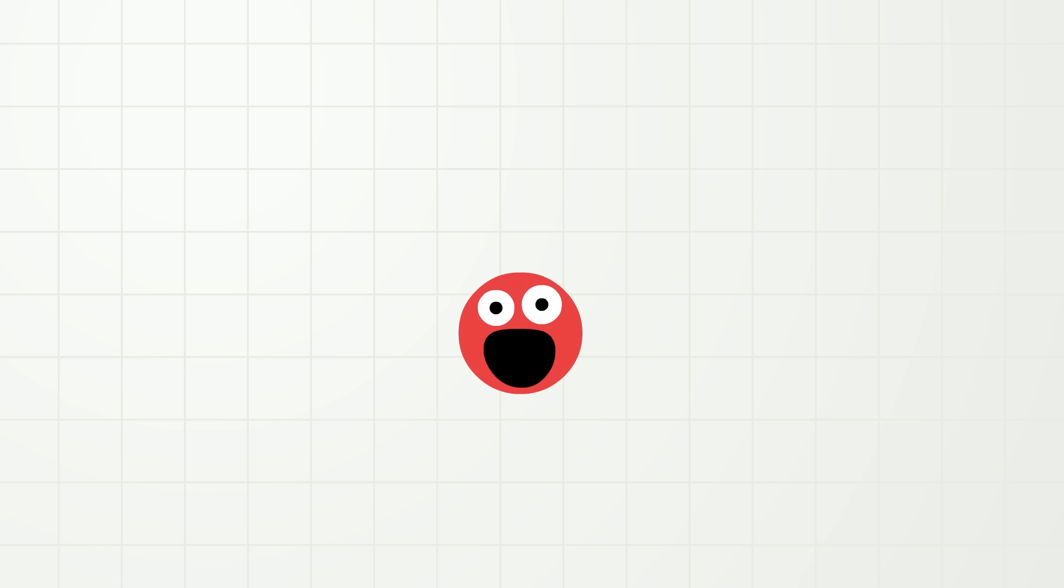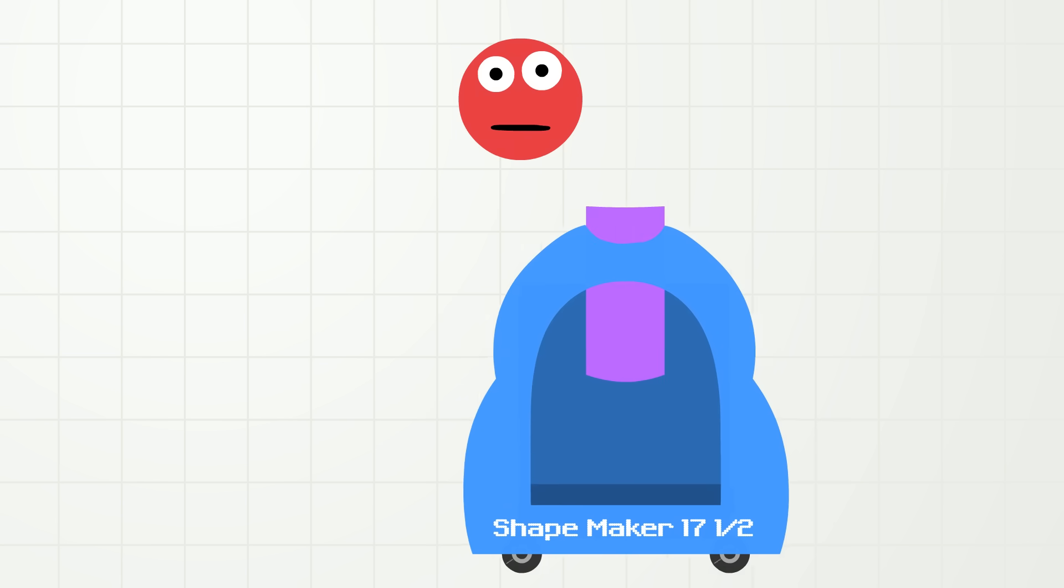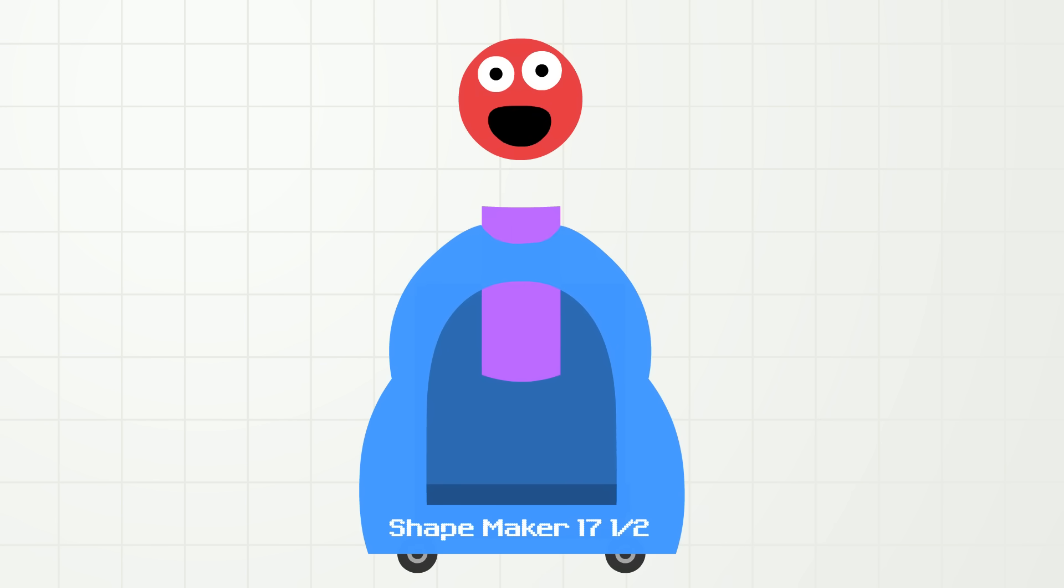Let me introduce you to my new machine called the ShapeMaker 17 and 1 half. The ShapeMaker 17 and 1 half will make some shapes for us, but I need you to help me sort them. You can tell me which side, the right side or the left side, the shape should go according to an attribute. Attribute!